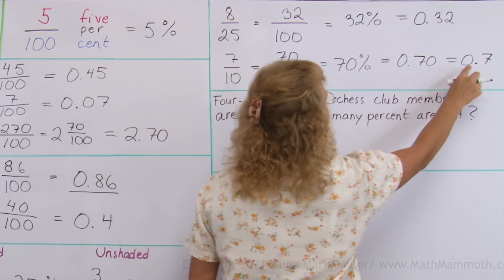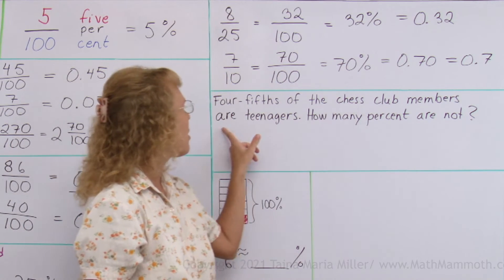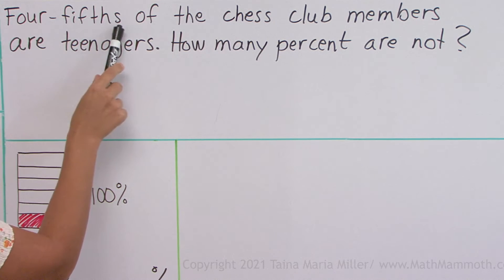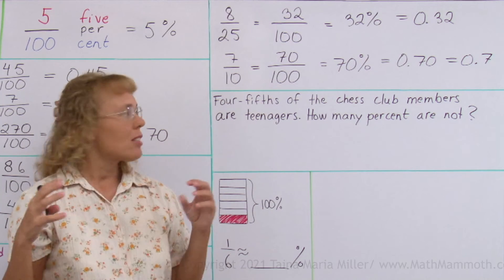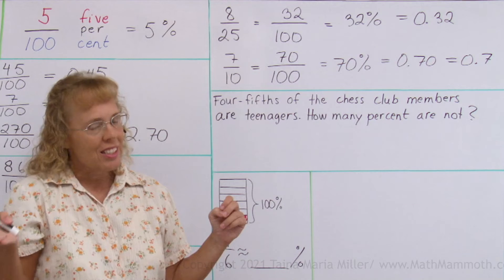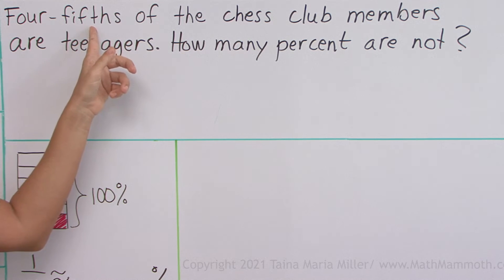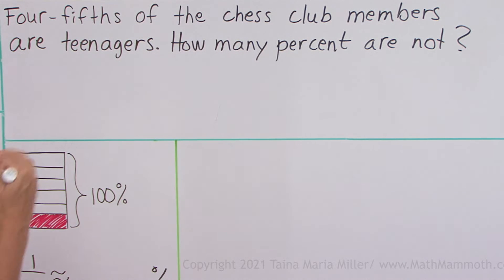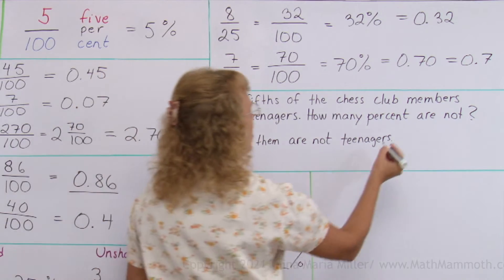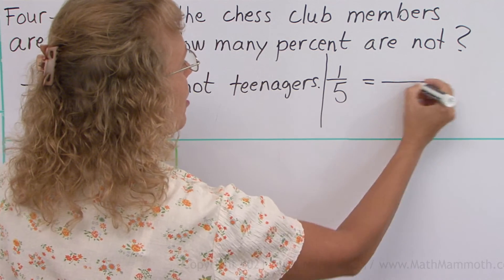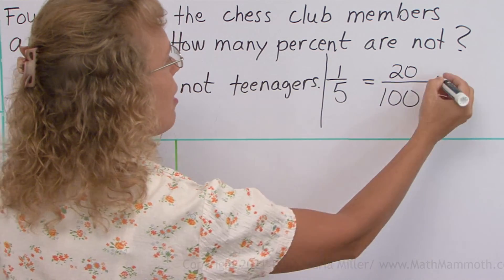4 fifths of the chess club members are teenagers. How many percent are not? It gives us a fraction: 4 fifths are teenagers. We don't know how many members are in the club, but we know 4 fifths are teenagers and the rest are not. If 4 fifths are teenagers, then 1 fifth are not teenagers. So we just change 1 fifth into a percentage. It works through equivalent fractions since 5 goes into 100 evenly: 5 times 20 and 1 times 20 — that's 20 hundredths, which is 20%.